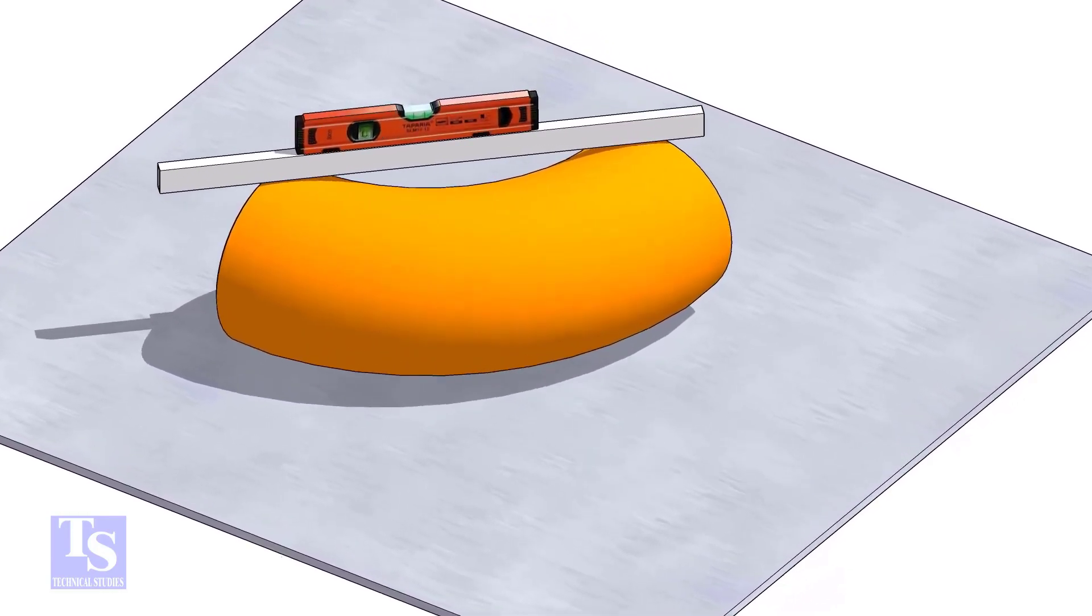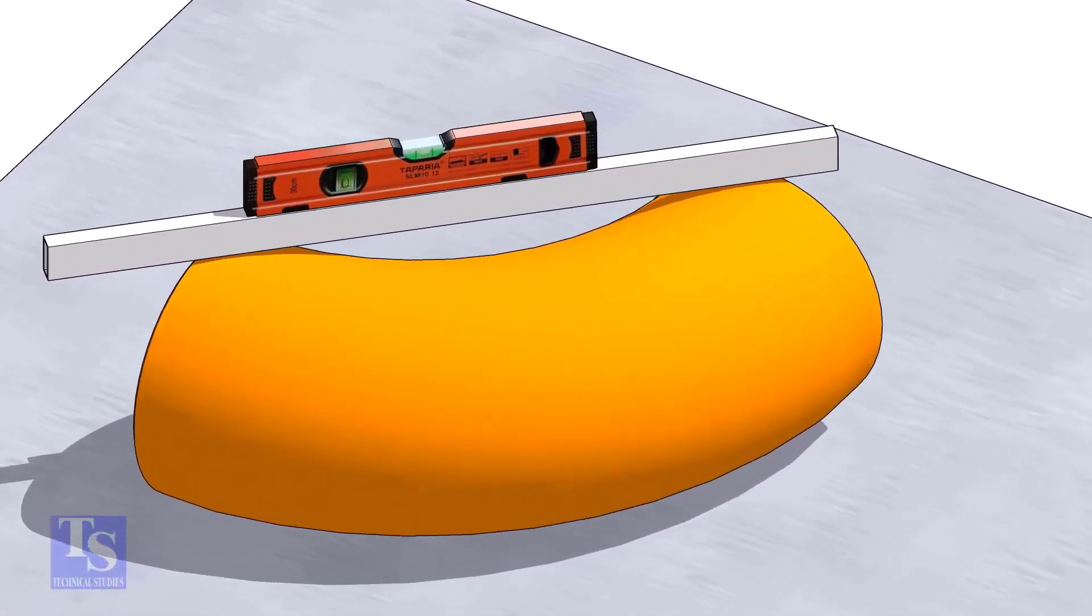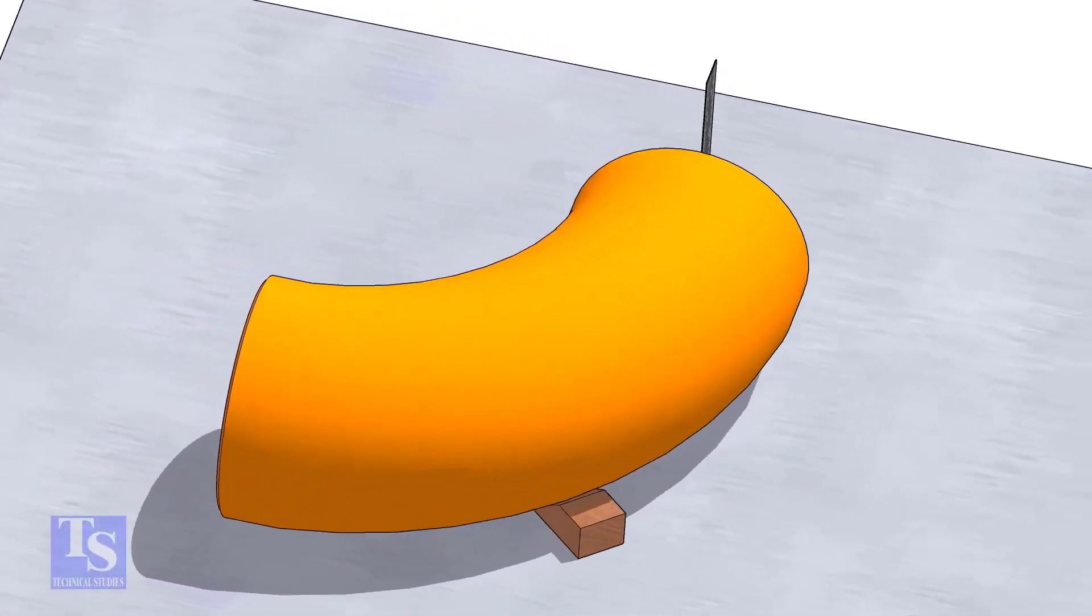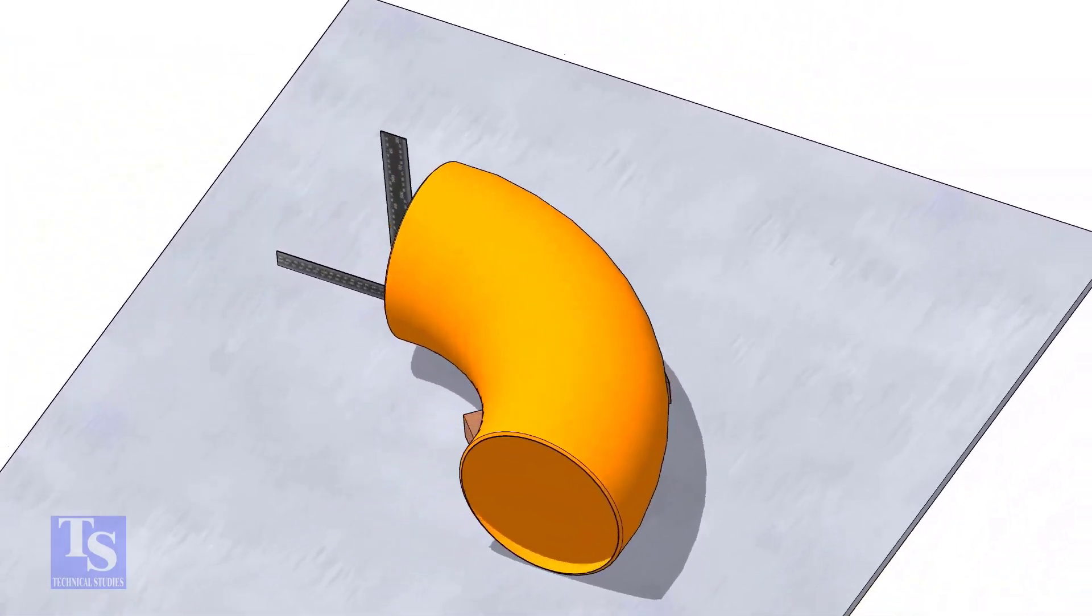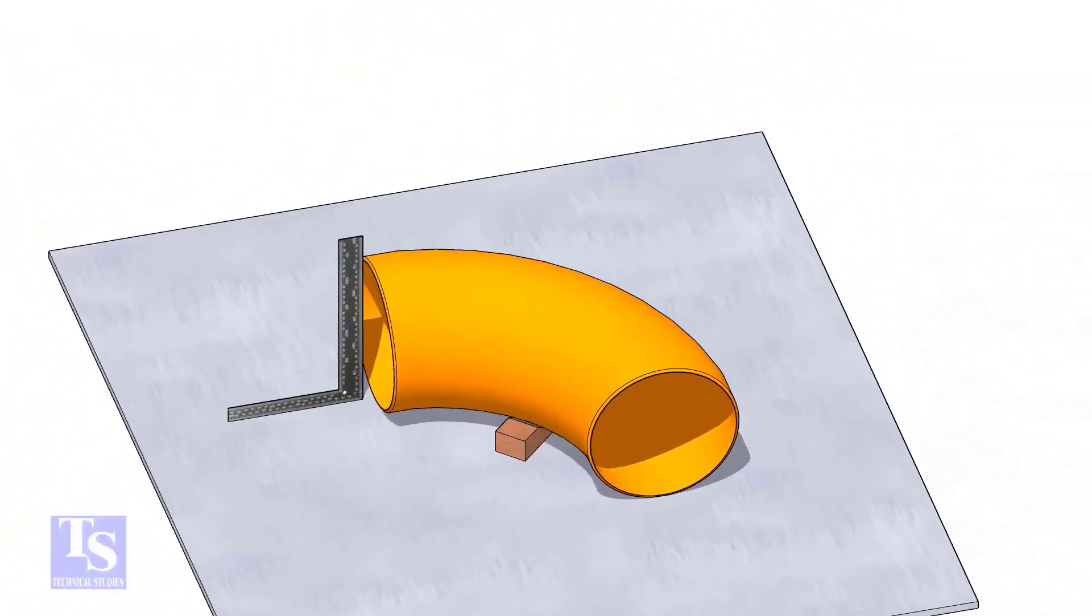Check the level of the elbow. Check the squareness of the face of the elbow with the plate. If necessary, put some packing below as shown.